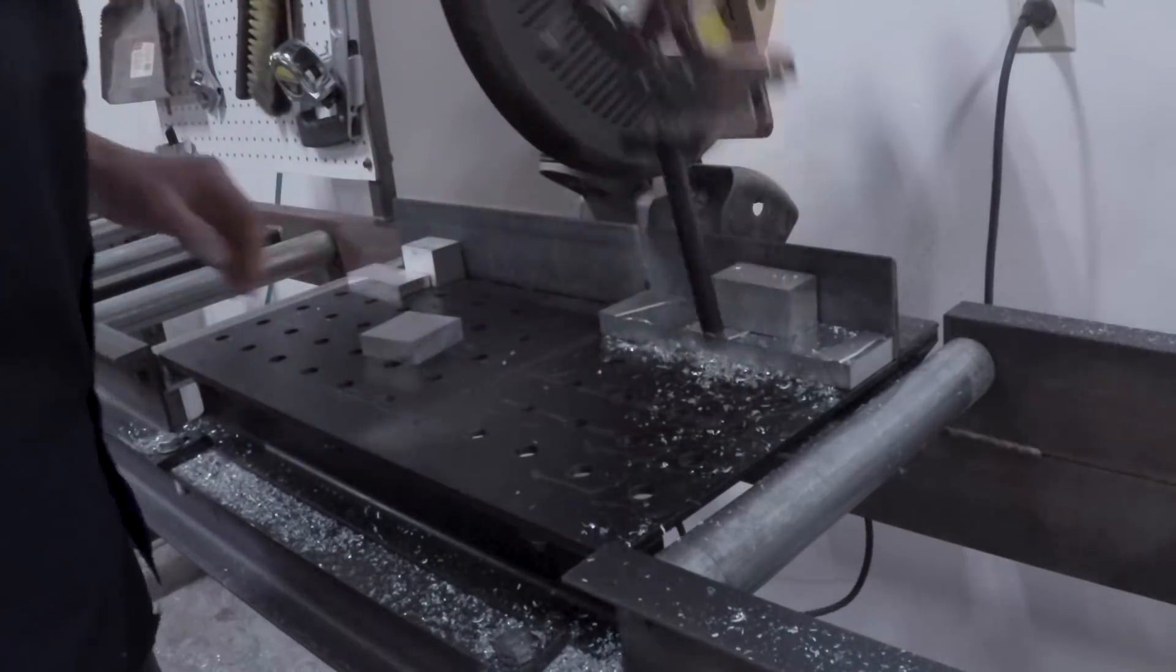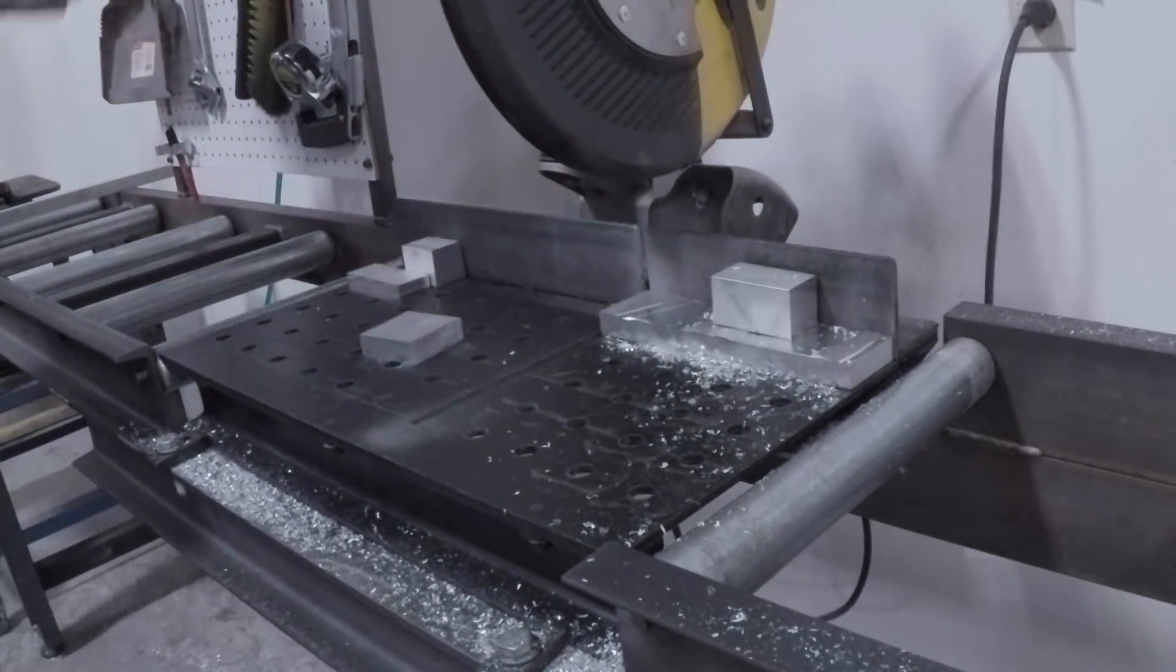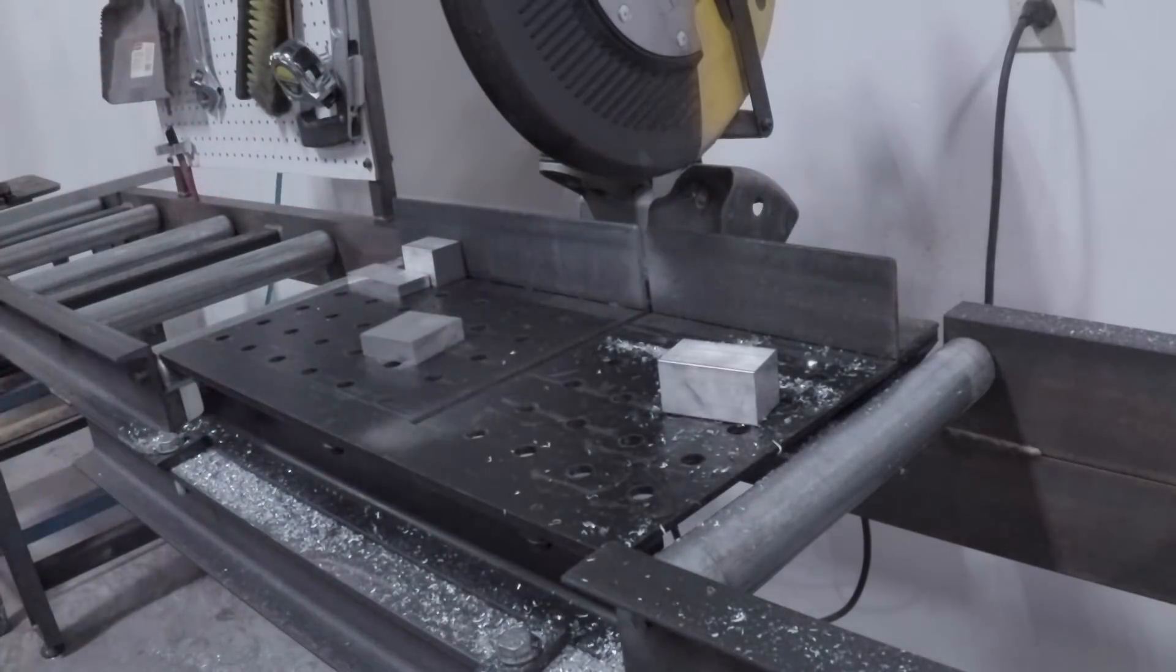And we are biased because one of our Saunders Machine Works products these days is an aftermarket plate that really makes the saw more versatile, reliable, accurate and safe.